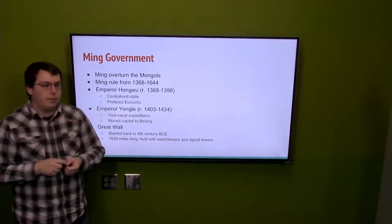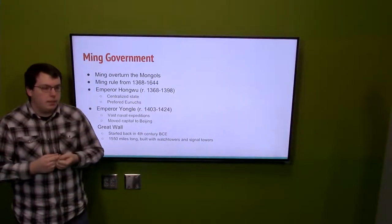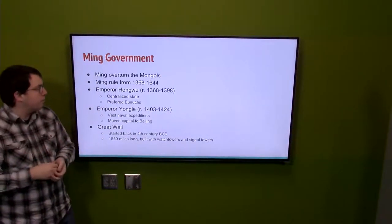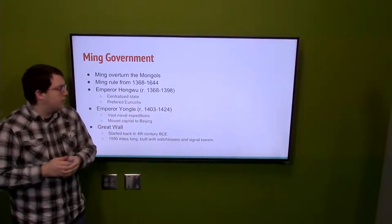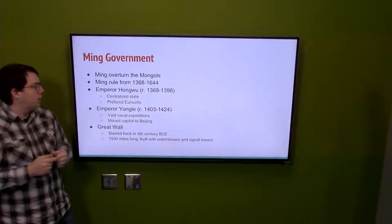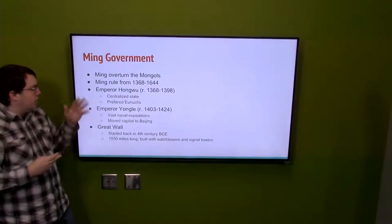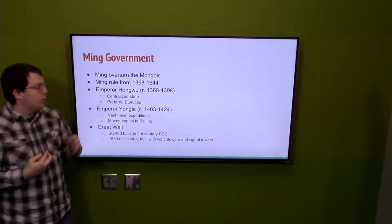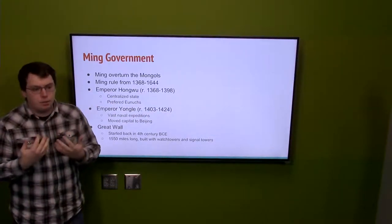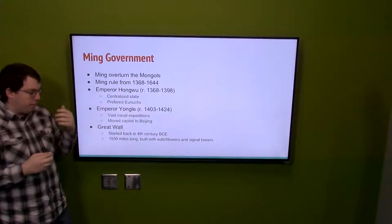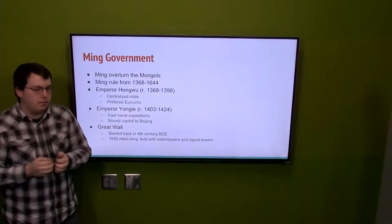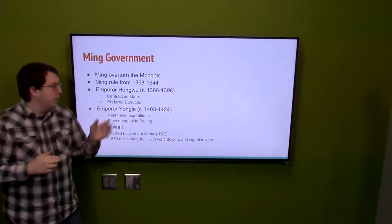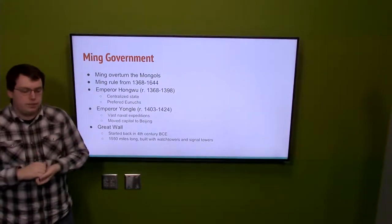The Chinese weren't very happy about this, and in 1368 they overthrew the Mongol leaders, creating the Ming dynasty. The Ming ruled from 1368 to 1644. The text talks about two great emperors that define the Ming. First, Emperor Hongwu, who ruled from 1368 to 1398 — the first Ming emperor. His rule is characterized by bringing back Confucian ideas, traditional Chinese values and laws the Mongols had discarded, and creating the centralized state seen in previous dynasties.